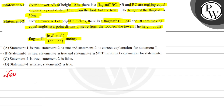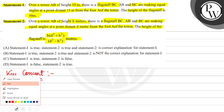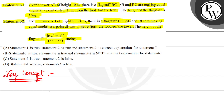Let me write the key concept. The key concept here is: 2 tan θ upon 1 minus tan² θ equals tan 2θ.